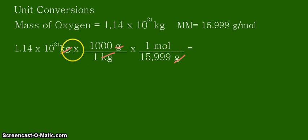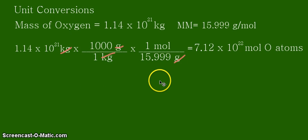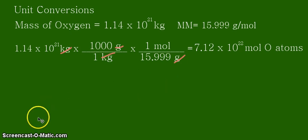We do the calculation to get our answer. After calculating, we get 7.12 times 10 to the 22 moles of oxygen atoms. This tells us that 7.12 times 10 to the 22 moles of oxygen atoms are present in the whole ocean, which has the mass of 1.14 times 10 to the 21 kilograms. That's all for this video — thank you for listening and continue learning.